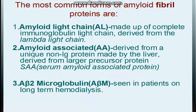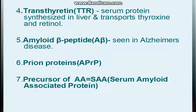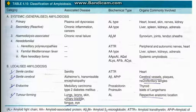Beta-2 microglobulin amyloid is seen in patients on hemodialysis. Transthyretin is responsible for the transportation of thyroxine and retinol — this protein is altered and deposited in various disorders. Amyloid beta peptide is seen in Alzheimer's disease, and prion proteins deposit in prion disease.